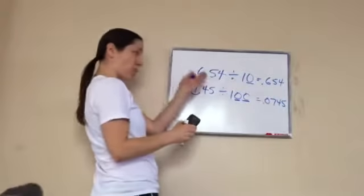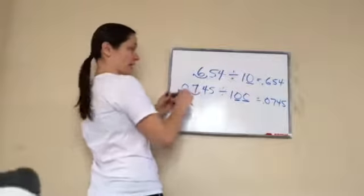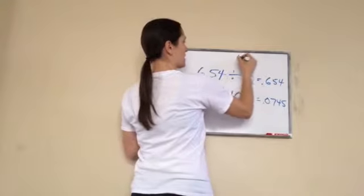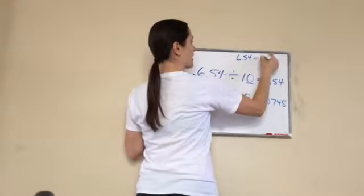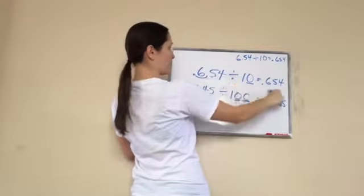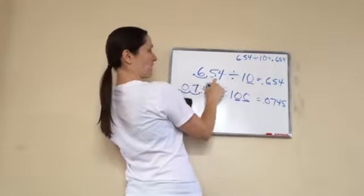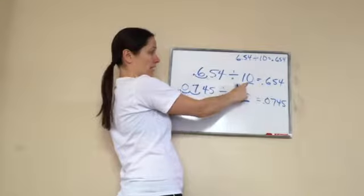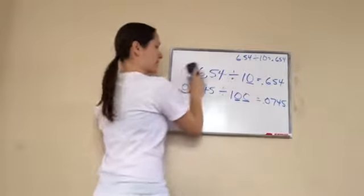Okay. So let me kind of prove to you real quick that I'm actually right. So we took 6.54 and divided it by 10, and that equaled 0.654. Right? That's what we said. 6.54 divided by 10. Right? Yep.